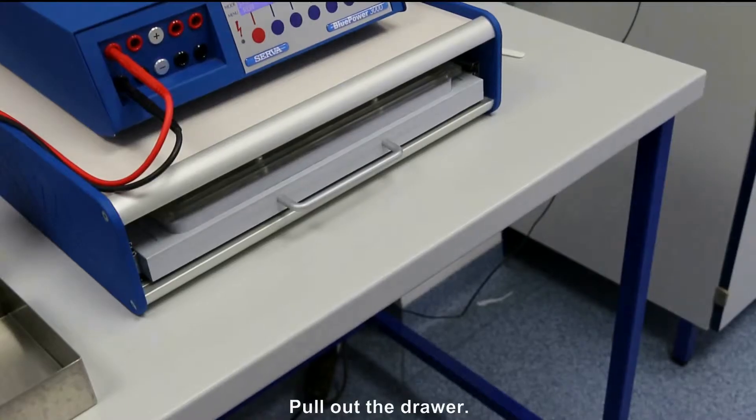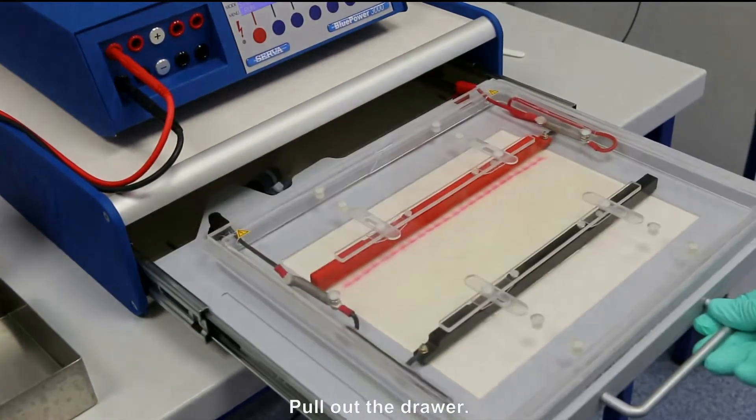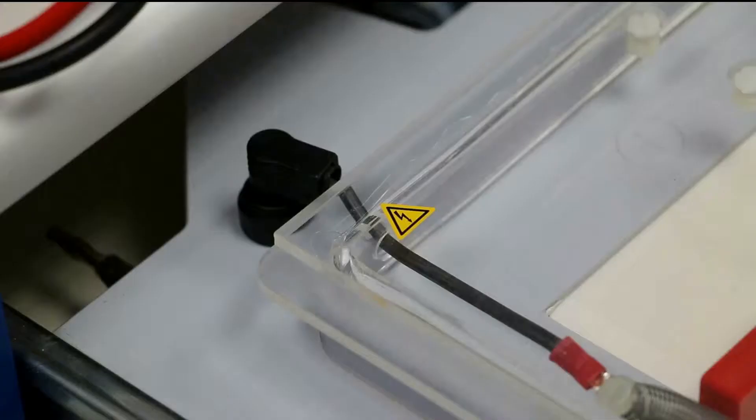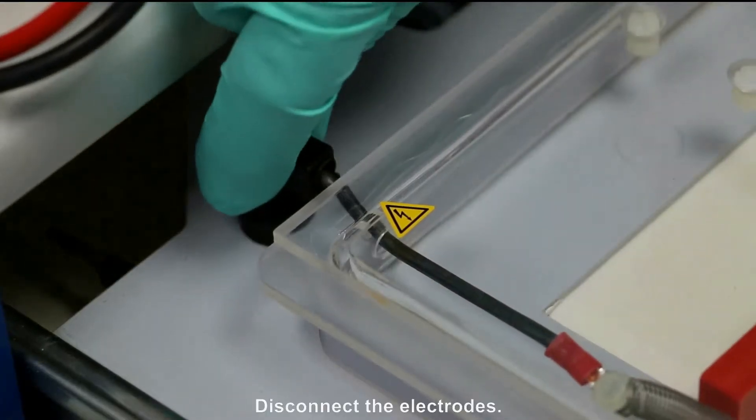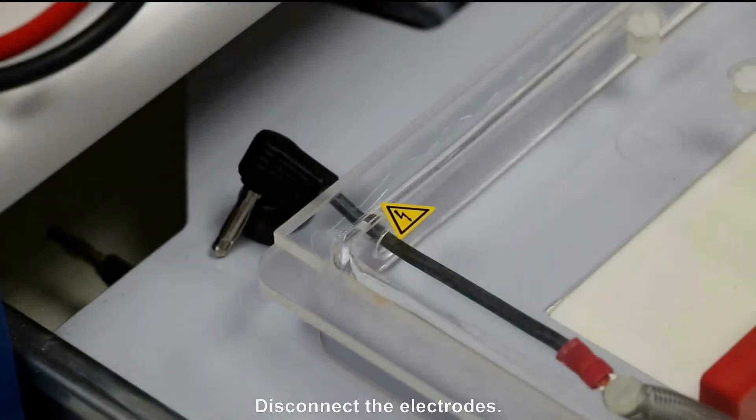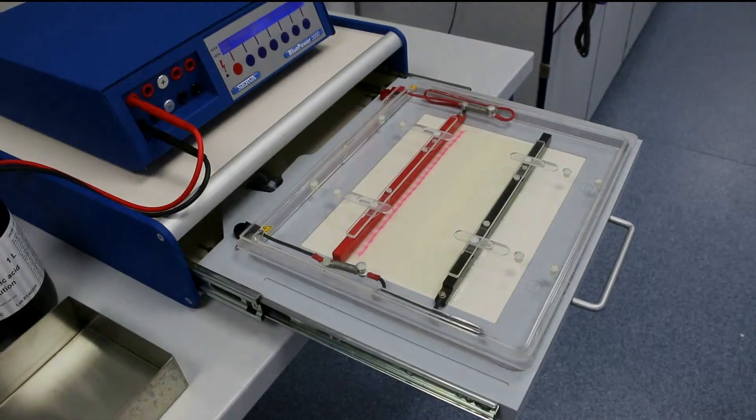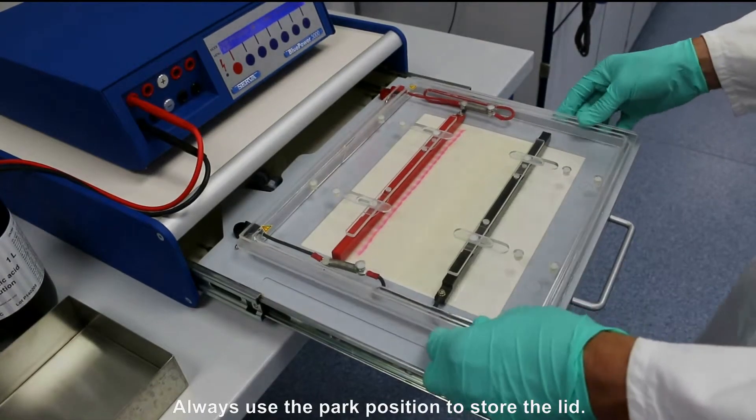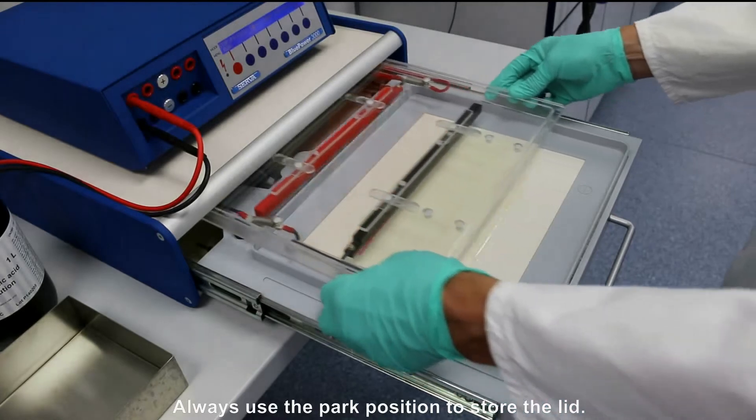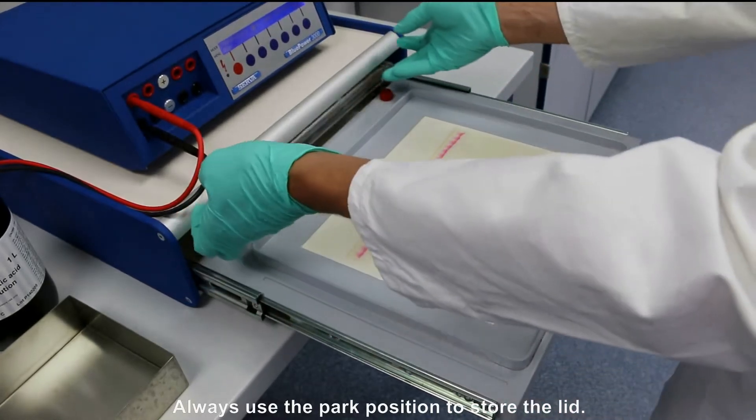Turn the power supply off. Pull out the drawer and disconnect the electrodes. Remove the lid. Always use the built-in park position for secure storage.